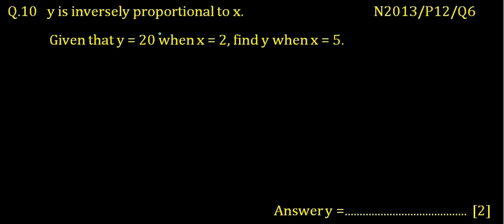So y is inversely proportional to x, so we write y equals k upon x. And if it were directly proportional, we write y equals kx. Since it is inversely proportional, we write k upon x.